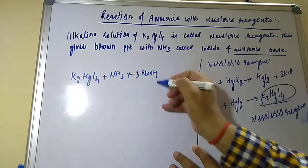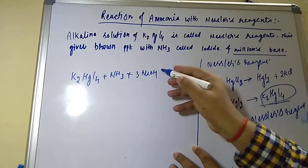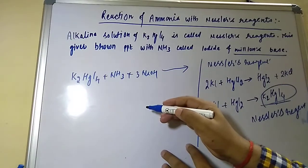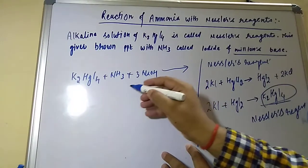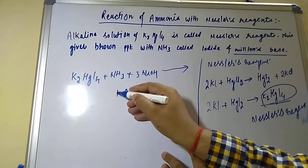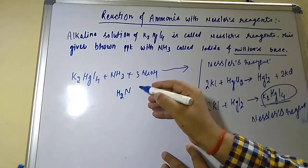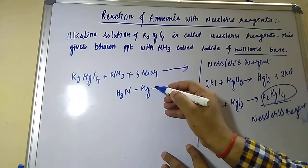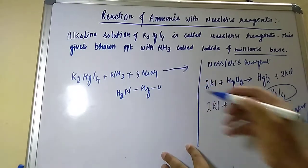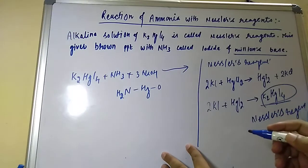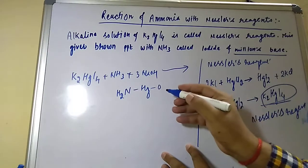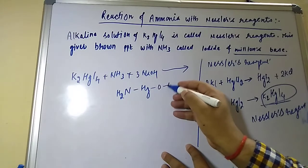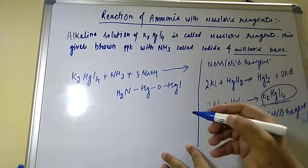What it will give? It will give the brown precipitate of Millon's base. So it is NH2HgO and HgO and HgI. This is what the brown precipitate.